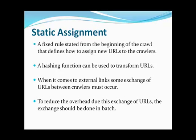With Static Assignment Policy, there is a fixed rule stated from the beginning of the crawl that defines how to assign new URLs to crawlers. A hashing function can be used to transform URLs into a number that corresponds to the index of the corresponding crawling process. As there are external links going from a website assigned to one crawling process to a website assigned to a different crawling process, some exchange of URLs must occur. To reduce the overhead due to this exchange, it should be done in batch — several URLs at a time.